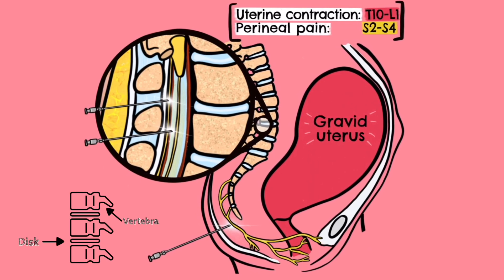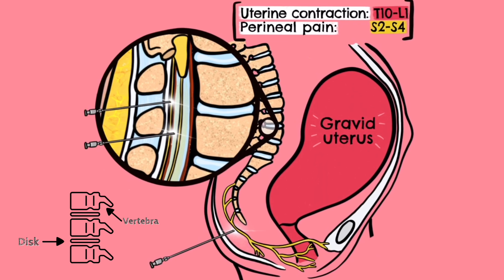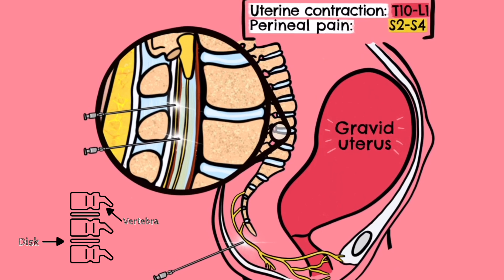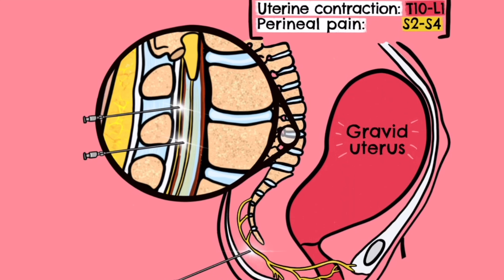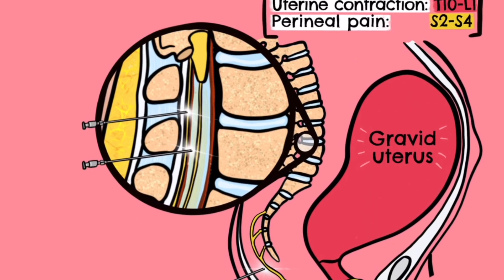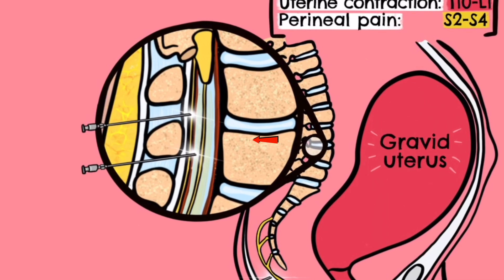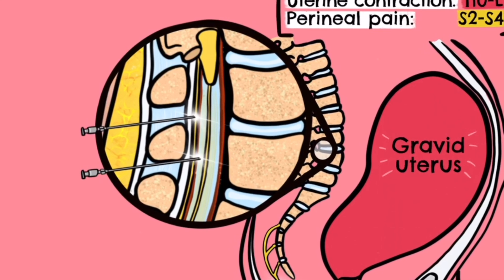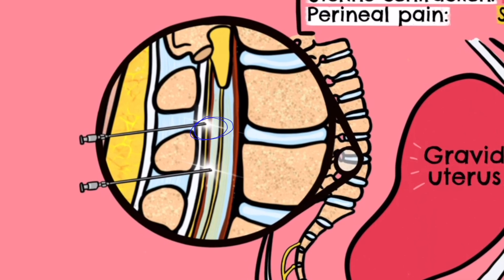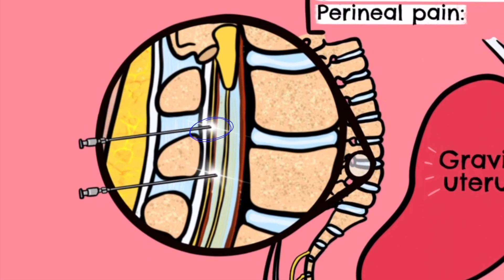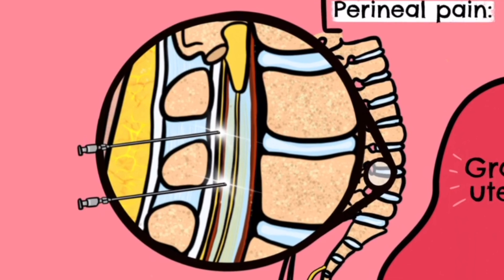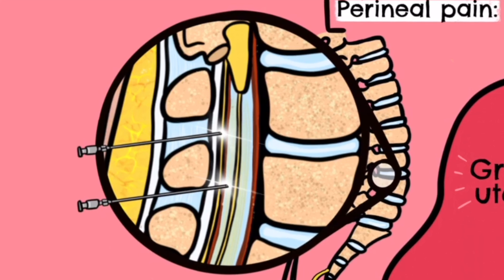The spine consists of bony vertebrae stacked on top of each other, with each vertebra separated by a shock-absorbing intervertebral disc. Ligaments and muscles connect the vertebrae together to help maintain the structure of the spine, forming the tunnel-like spinal canal that houses and protects the spinal cord and its branching spinal nerves. The spinal cord is bathed in cerebrospinal fluid and surrounded by a protective membrane called the dura. Just outside this membrane is the epidural space, which is filled with fluid, bounded anteriorly by the posterior longitudinal ligament and posteriorly by the ligamentum flavum, and is the first area we can target to reduce pain in labour.